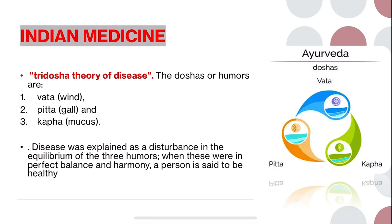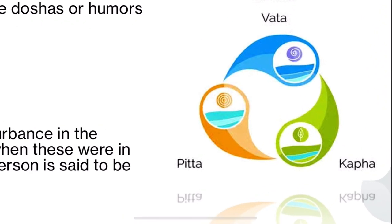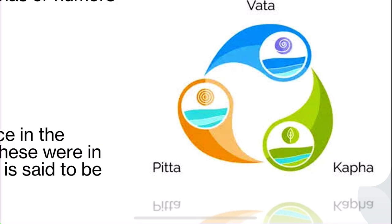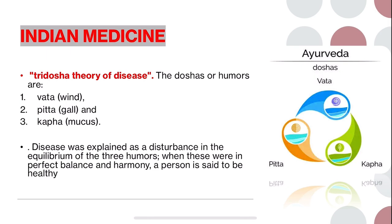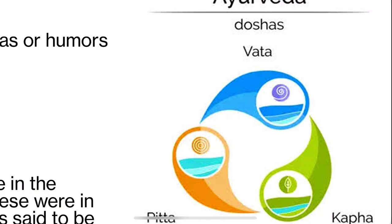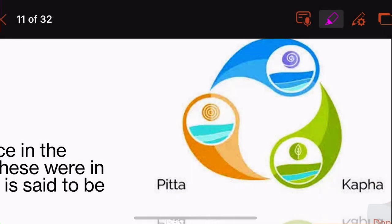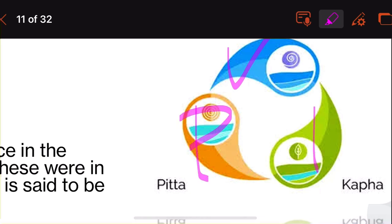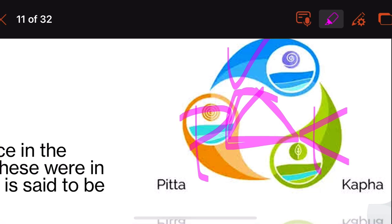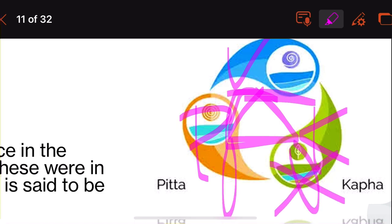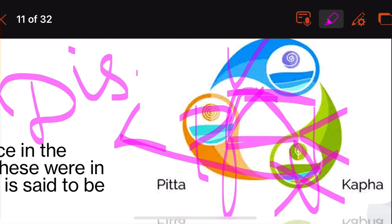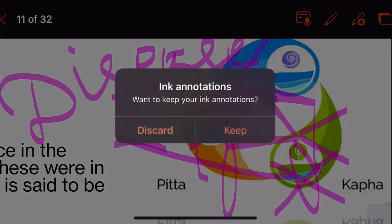A very important theory in Ayurveda is the Trishodha theory. The three humors are Vata (wind), Pitta (gall) and Kapha (mucus). When there is any disturbance in the equilibrium of these three humors, it results in disease. All three have to be in equilibrium — if any one leg of this triangle breaks, it results in disease in a person. This is the belief of Indian medicine.